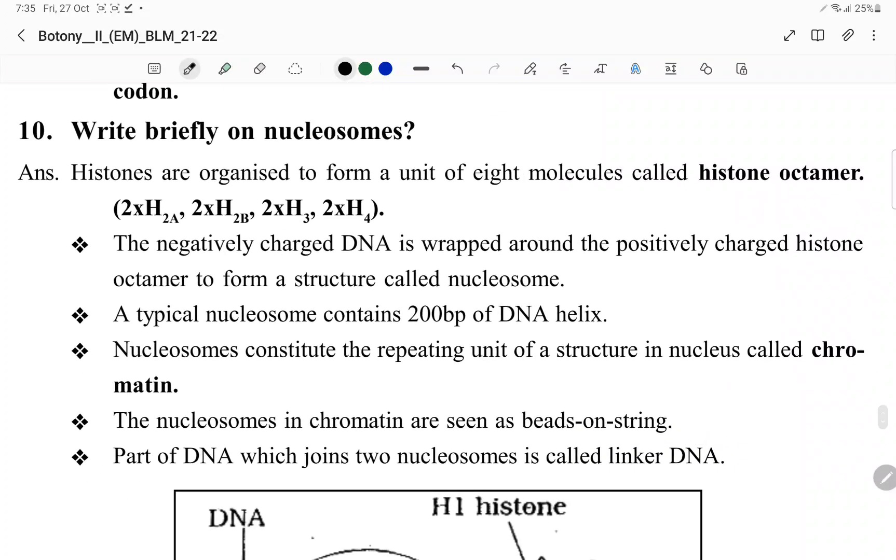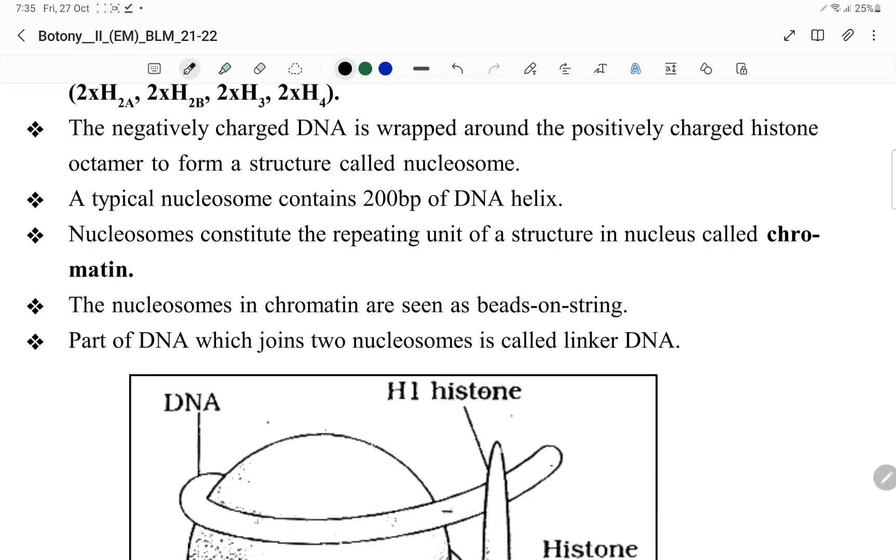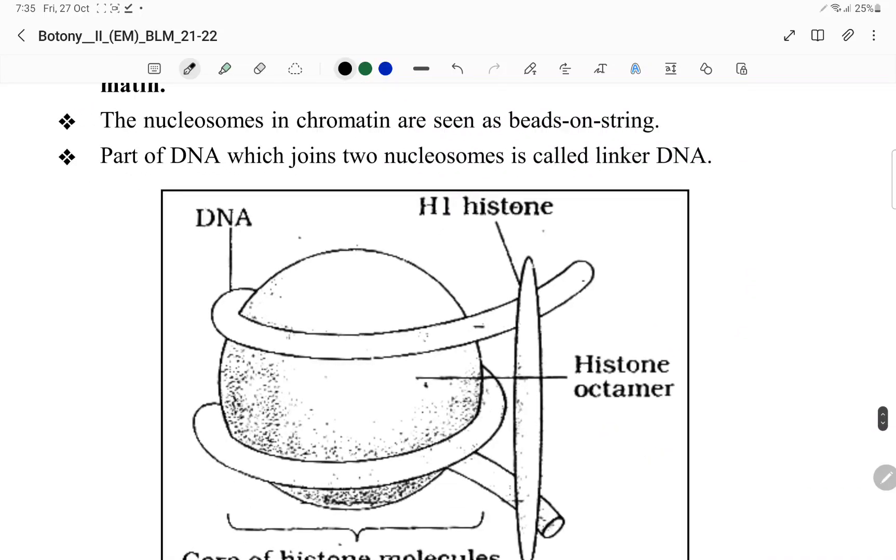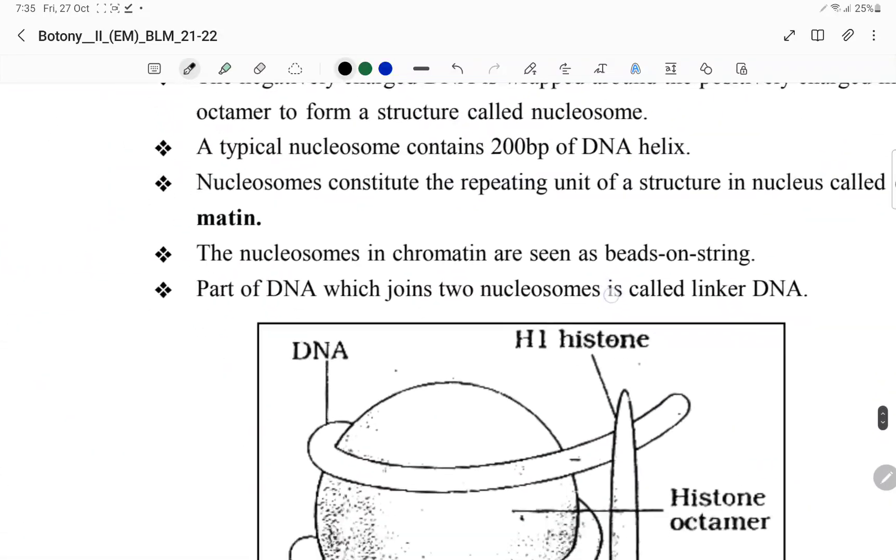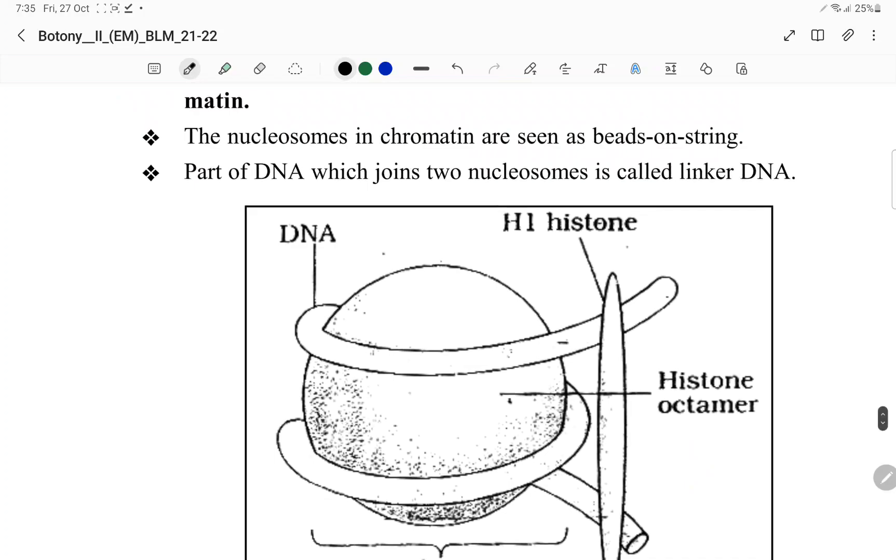Nucleosomes are organized to form a unit of eight molecules called histone octamer: two H2a, two H2b, two H3, and two H4. The negatively charged DNA wraps around the positively charged histone proteins. A nucleosome contains 200 base pairs. Nucleosome is the repeated unit structure of chromatin and appears as beads on a string. Nucleosomes are linked by linker DNA. H1 is the linker histone that binds to the linker DNA.